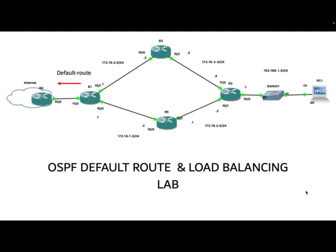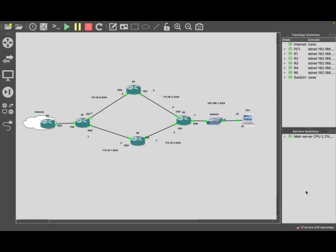R1 is connected to the ISP and has a default route to R4, which is acting as the ISP router connected to the internet. We have a default route pointing to R4. For subnets within the enterprise network, a default route is needed. The router connected to the ISP router has to advertise the default route to other routers using OSPF. This can be accomplished by enabling one command on R1.